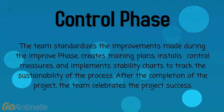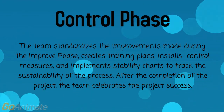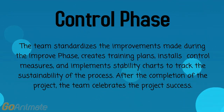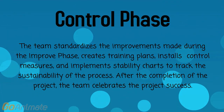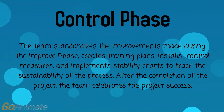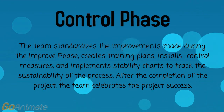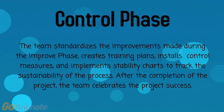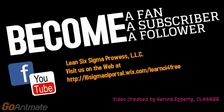In the Control phase, the team standardizes the improvements made during the Improve phase, creates training plans, installs control measures, and implements stability charts to track the sustainability of the process. After the completion of the project, the team celebrates the project's success. This concludes this brief video on performing a Lean Six Sigma project. If you enjoyed this video, please join us at l6sigmasyportal.wix.com/l6sigmasy for free.